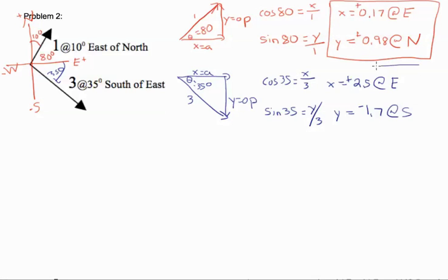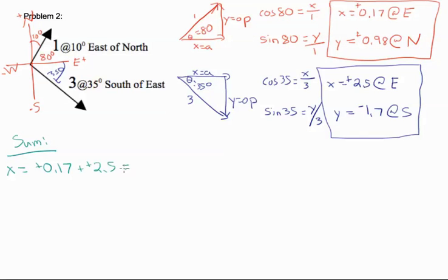And now you could sum them. Our x is positive 0.17 plus positive 2.5 gives you 2.67, or we can just say 2.7. And since it's positive, we know it's at east.